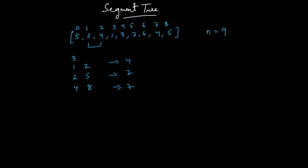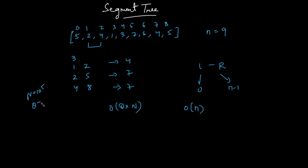So what is the brute force way of doing it? You simply range from L to R to find the maximum in that range. You're given Q queries, so the value of L can be 0 at minimum and R can be N minus 1 at maximum. For every query you might take O(N) time, so with Q queries the complexity is O(Q * N). If N is around 10^5 and Q is around 10^5, that's around 10^10 operations, which the machine cannot handle. So to solve such range problems, we use a segment tree.